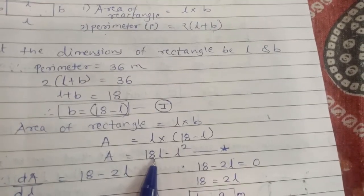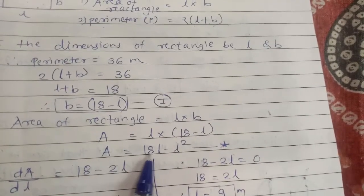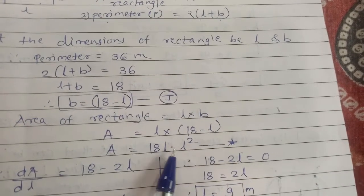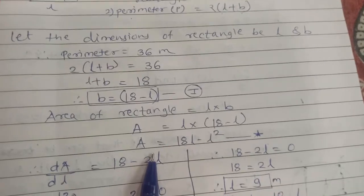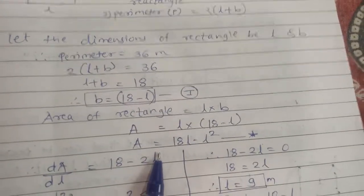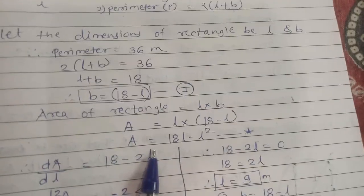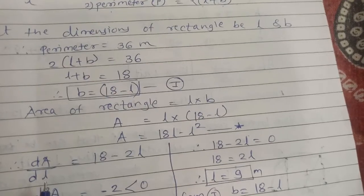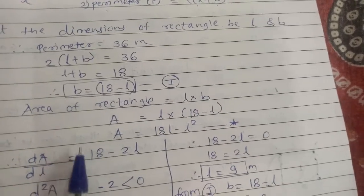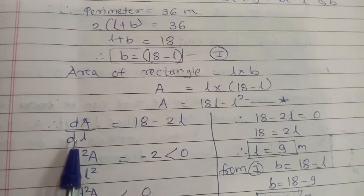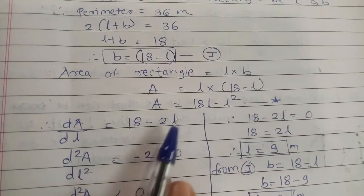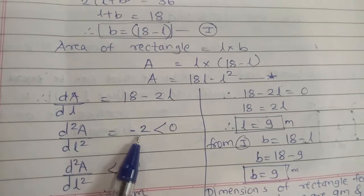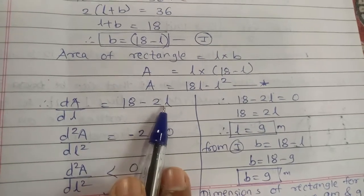This is our star equation, which is the main equation to solve. We find the first order derivative: dA/dl = 18 − 2l. Setting it to zero gives us the critical point. The second order derivative d²A/dl² = −2. Since −2 is less than zero, the area is maximum.